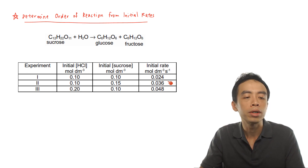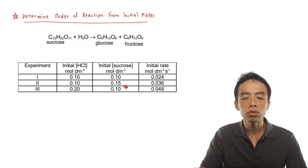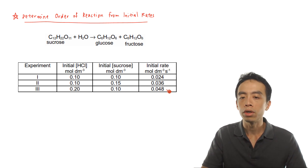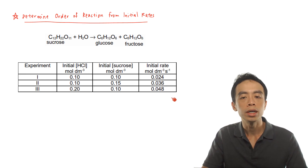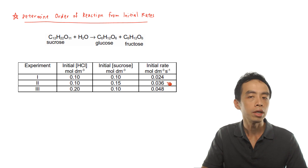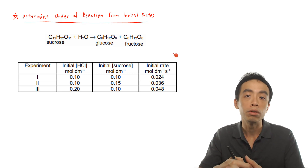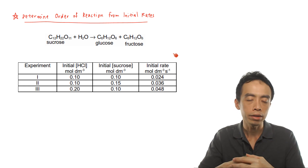In experiment 3, the concentration of HCl becomes 0.2 mol/dm³, sucrose concentration is 0.1 mol/dm³, and the initial rate is 0.048 mol/dm³/s. So we vary the concentration of HCl and the concentration of sucrose, and the rate is expected to change if the rate of the reaction is affected by the catalyst or the reactant.